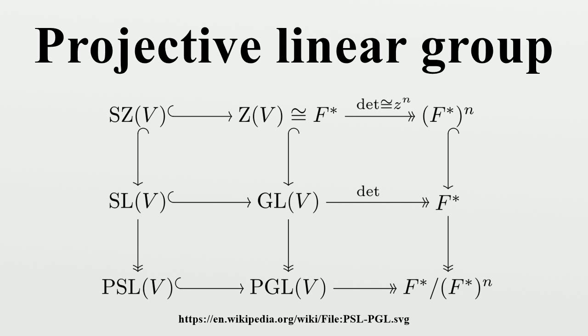For n ≥ 3, the collineation group is the projective semi-linear group, PΓL. This is PGL twisted by field automorphisms, formally PΓL ≅ PGL ⋊ Gal(K/K₀), where K₀ is the prime field for K. This is the fundamental theorem of projective geometry.